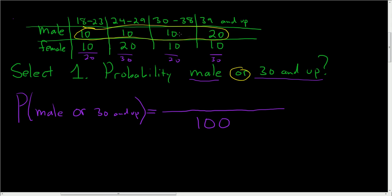And then for 30 and up — well, some are already circled, so we just have to circle the remaining ones here. 30 and up — we have to get these people too.